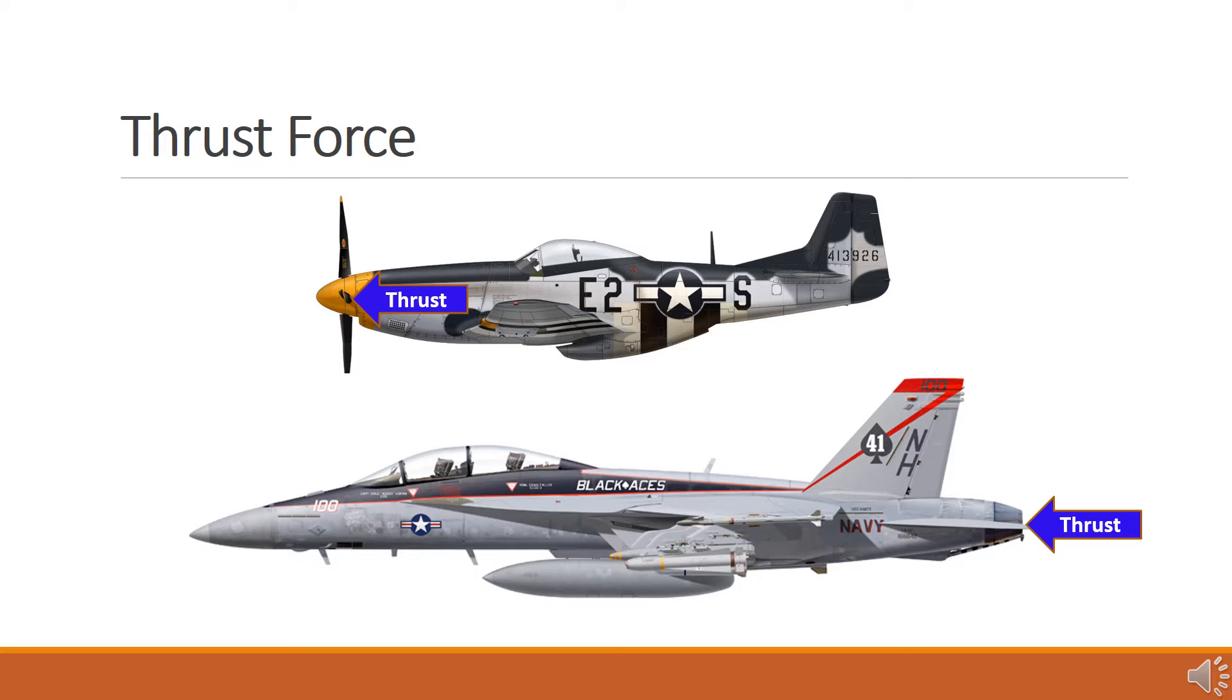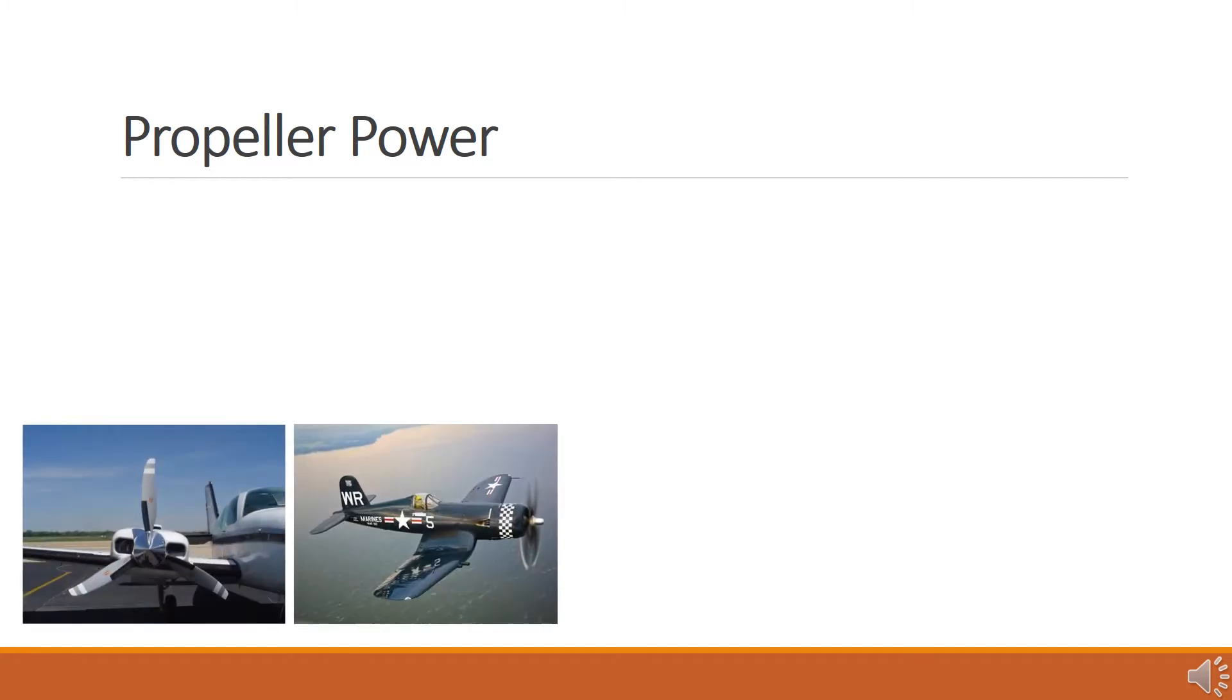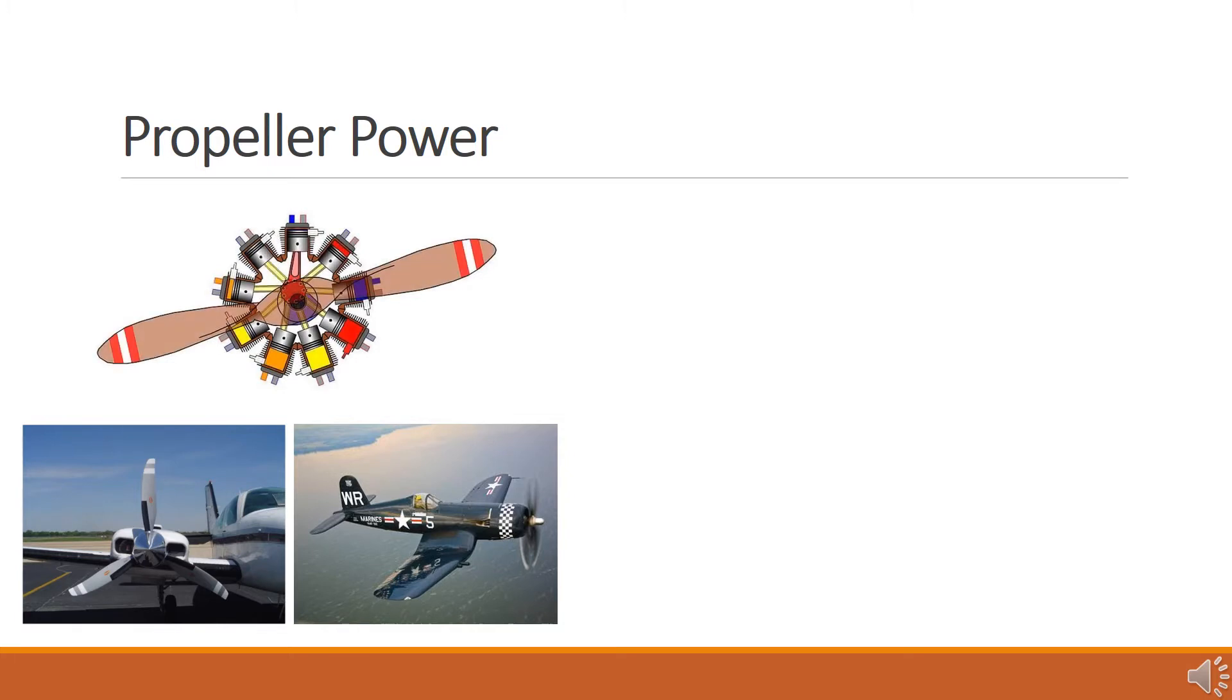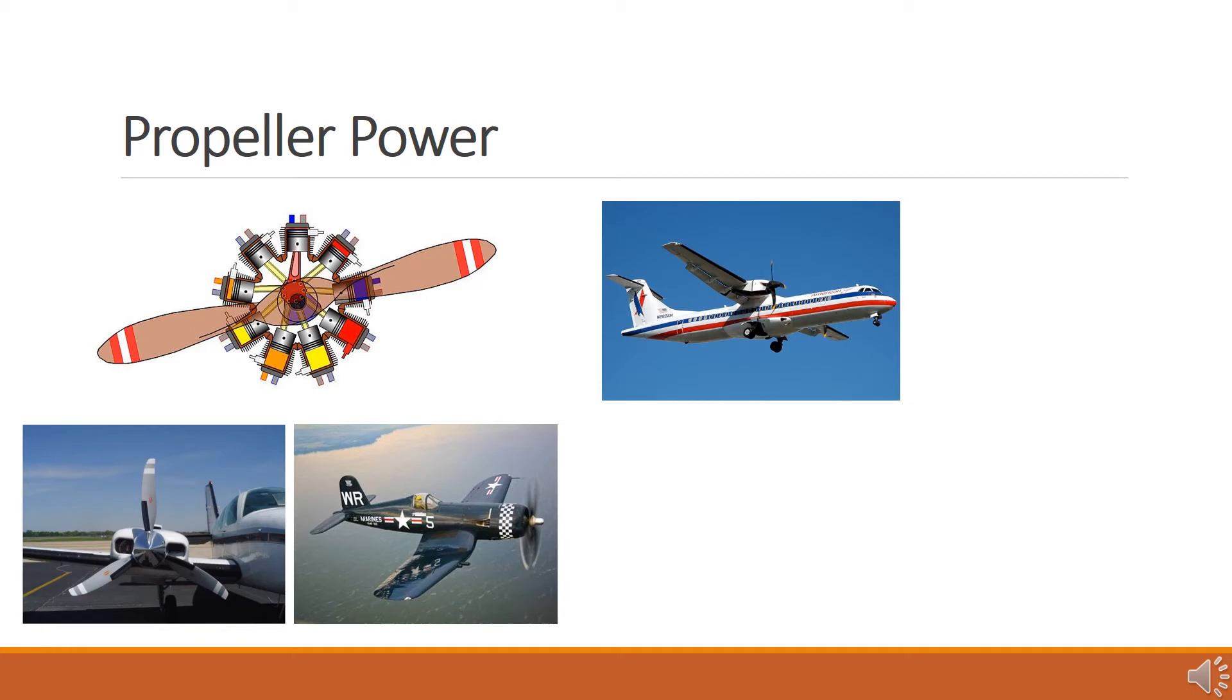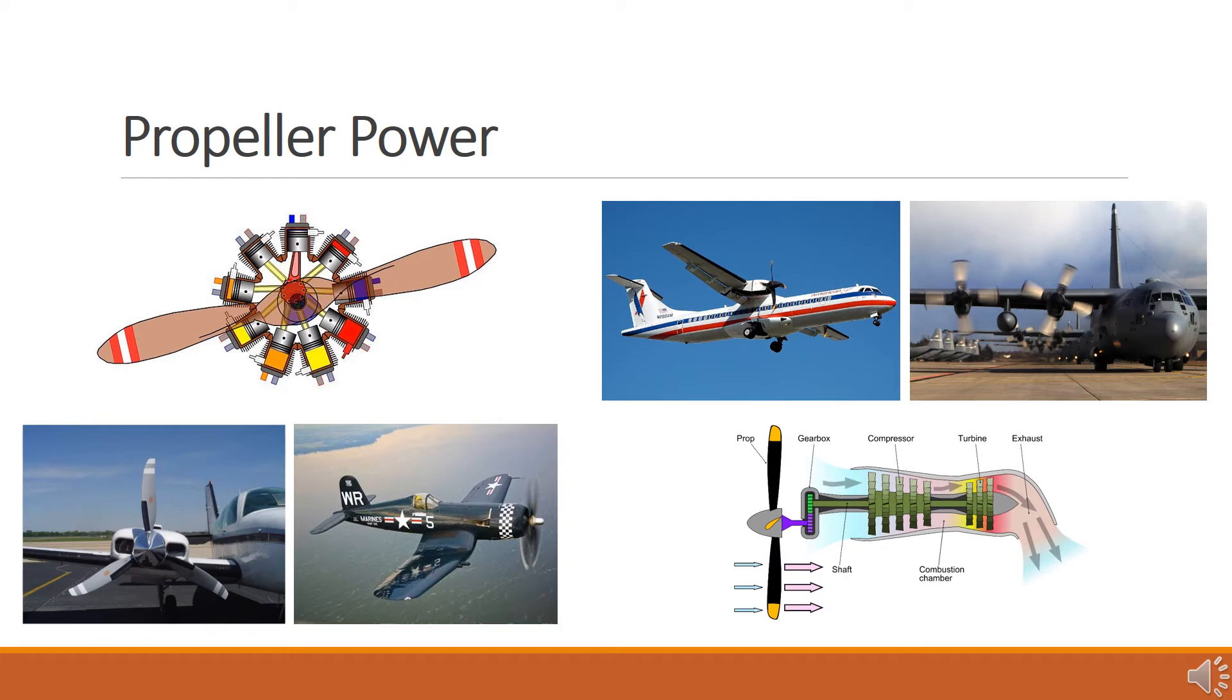We will be looking at two mechanisms used to generate thrust: propellers and jets or turbines. Most general aviation or private airplanes are powered by internal combustion engines which turn propellers to generate thrust. Still other corporate or commercial aircraft and some military aircraft use propellers driven by turbines. The specific details of how a propeller generates thrust are often complex, but we can address some of the basic concepts and still learn a few of the fundamentals in this lesson.